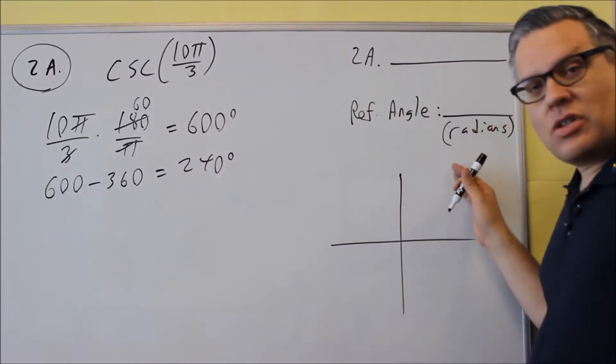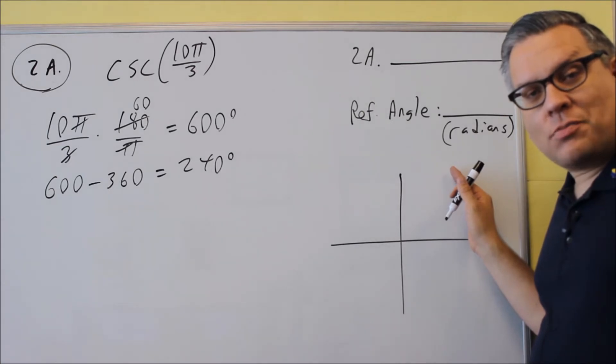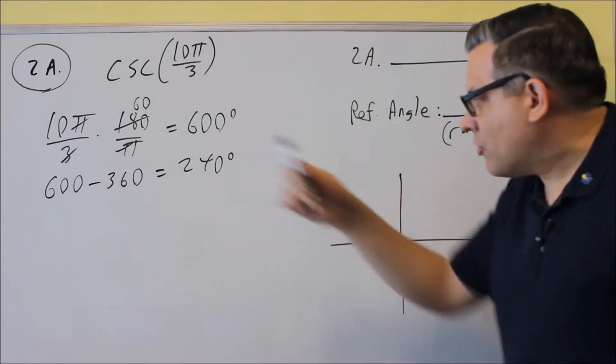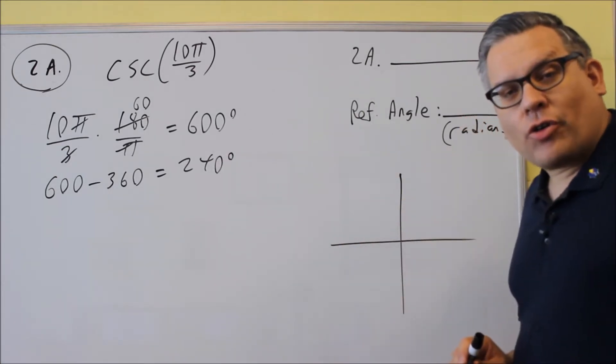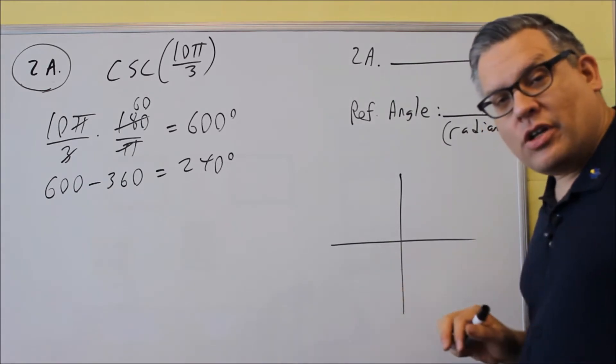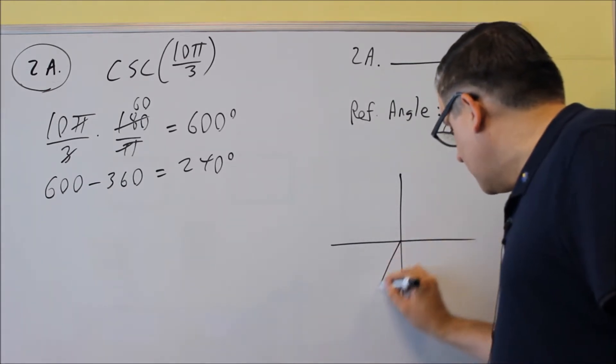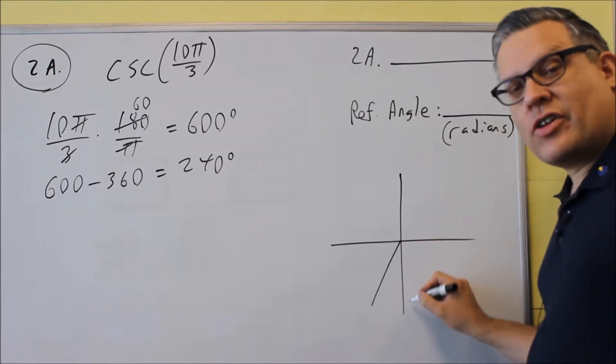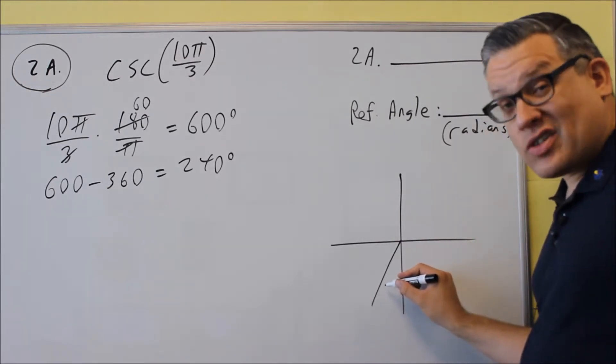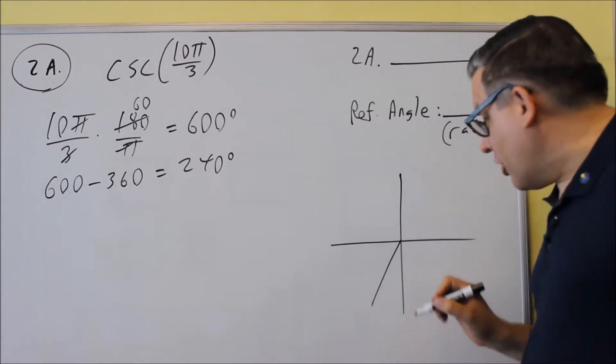Now we want to show this on here when we draw it in standard position. So the angle for 240 degrees, that's going to be down here in the third quadrant. So right here, it's a little bit less than 270, and it's basically 30 degrees less. So this is what the angle would look like.